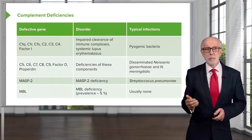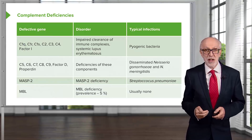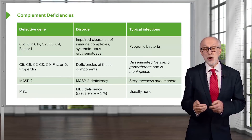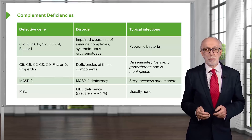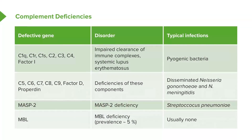In mannose binding lectin deficiency, which has quite a high prevalence for a primary immunodeficiency — in fact it's one of the most prevalent primary immunodeficiencies — there is usually no consequence, and most people with mannose binding lectin deficiency don't even know they've got it. The same is true of selective IgA deficiency: usually other parts of the immune response compensate, and one doesn't see a greatly increased incidence of particular infections.